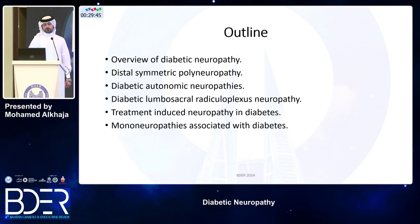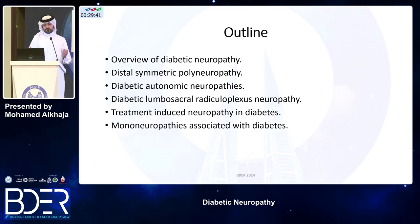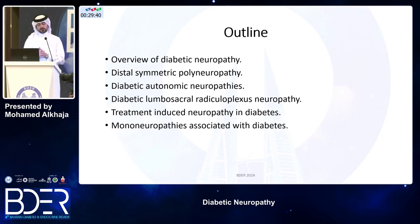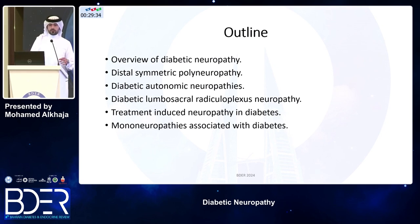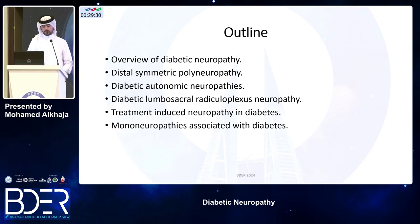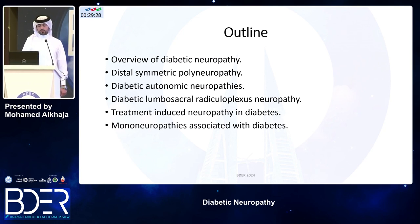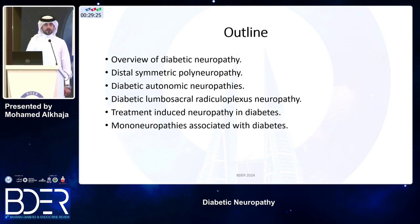The outline of this lecture will cover different forms of diabetic neuropathy, such as the classic distal symmetric polyneuropathy, the diabetic autonomic neuropathies, diabetic amyotrophy, treatment-induced neuropathy — what endocrinologists do to patients — and mononeuropathies associated with diabetes.